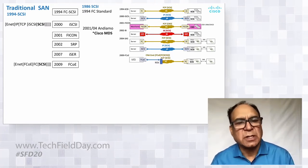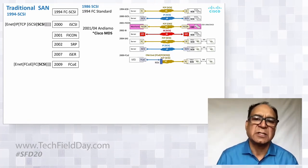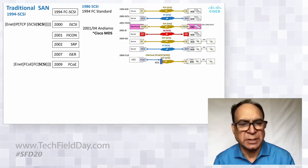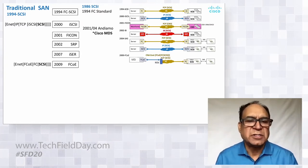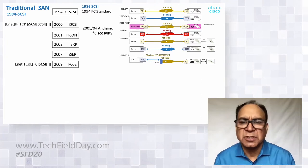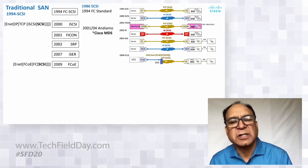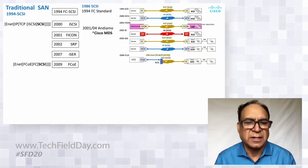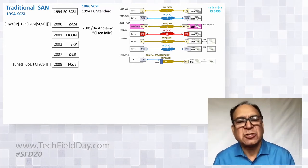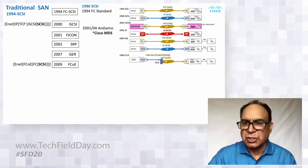RDMA got mapped into it, and iSCSI also took over with RoCE and iWARP. Then back in 2009, when FCoE started to become popular, Cisco with their 5K productized FCoE and unified Fibre Channel and Ethernet to the top-of-rack switch.